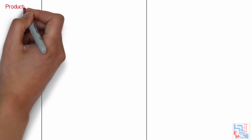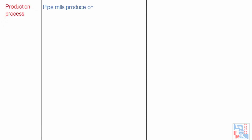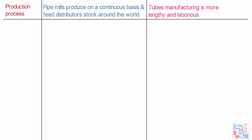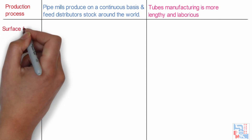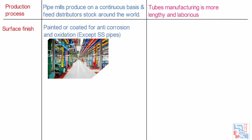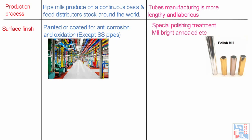In terms of production process, pipe mills produce on a continuous basis and feed distributor stocks around the world, whereas tube manufacturing is more lengthy and laborious. From a surface finish point of view, pipes are painted or coated for anti-corrosion and oxidation protection, except stainless steel pipes, whereas tubes undergo special polishing treatments like mill bright annealing, etc.